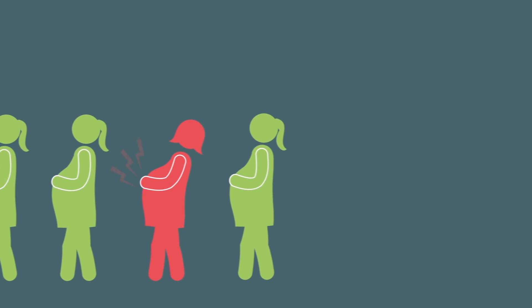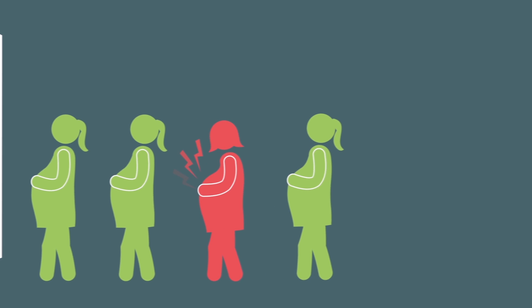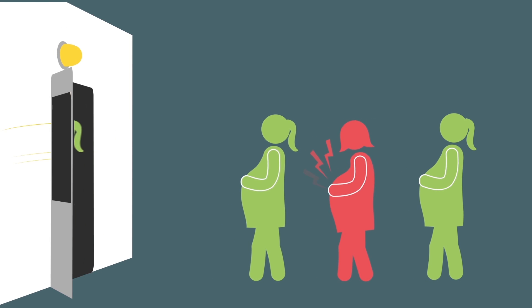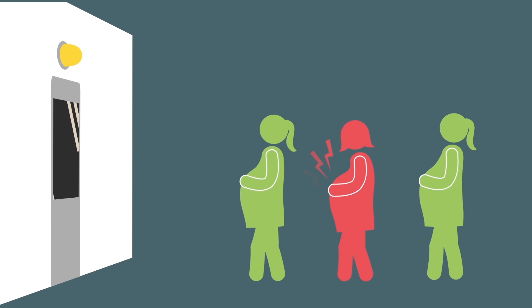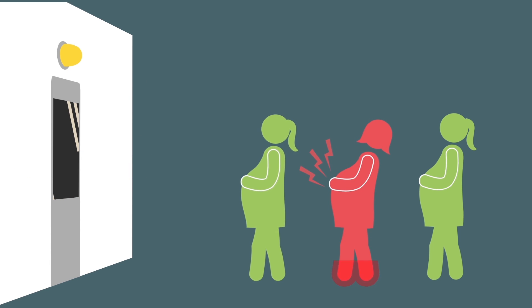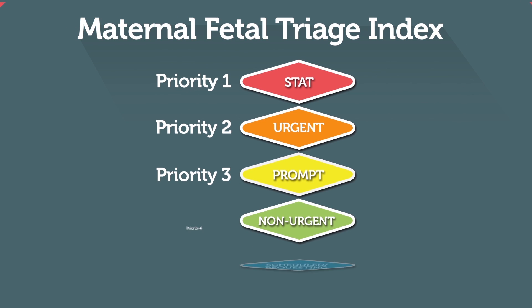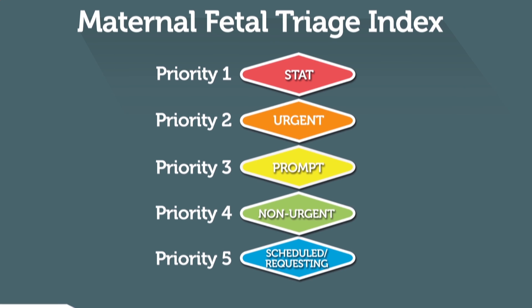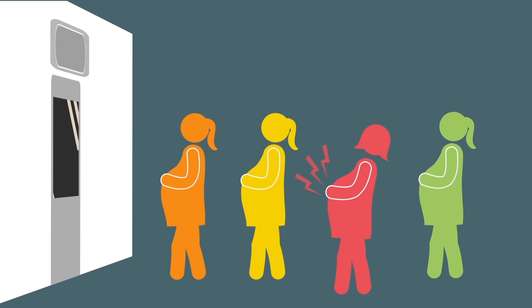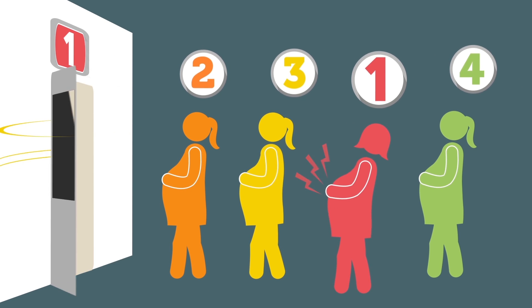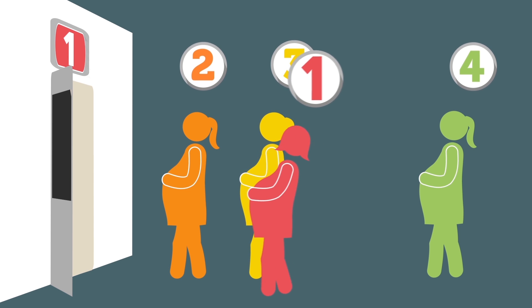Triage in obstetric units has traditionally been done on a first-come, first-served basis. One of the problems with this approach is that it does not efficiently identify those women who need urgent or immediate care. A systematic approach to triage using an acuity scale has been shown to improve the efficiency of triage and facilitate communication among members of the health care team.